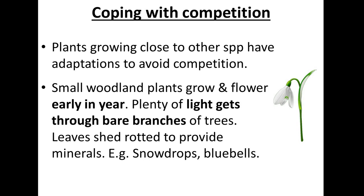There are also other adaptations that plants could have to maximize the amount of light they can get. For instance, snowdrops bud and flower earlier in the year, early in spring, before the trees and bigger plants get their leaves. So there is still light that can reach the woodland floor, making them the first plants to show on a woodland floor.